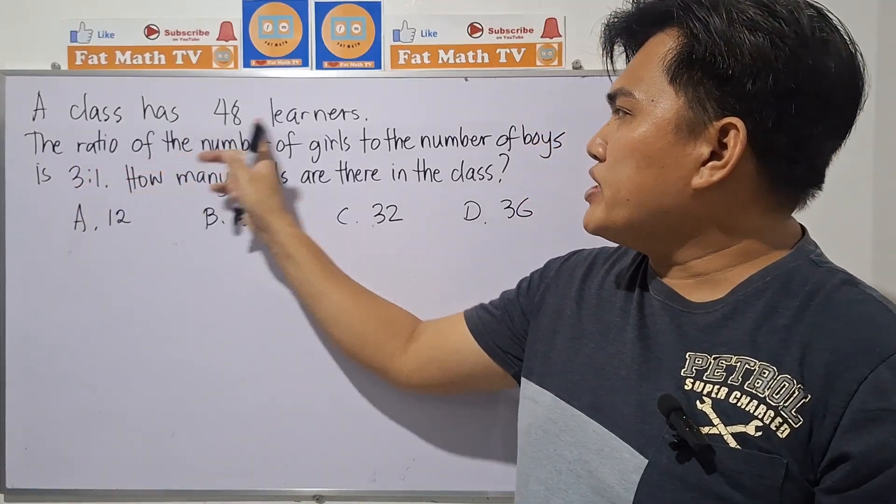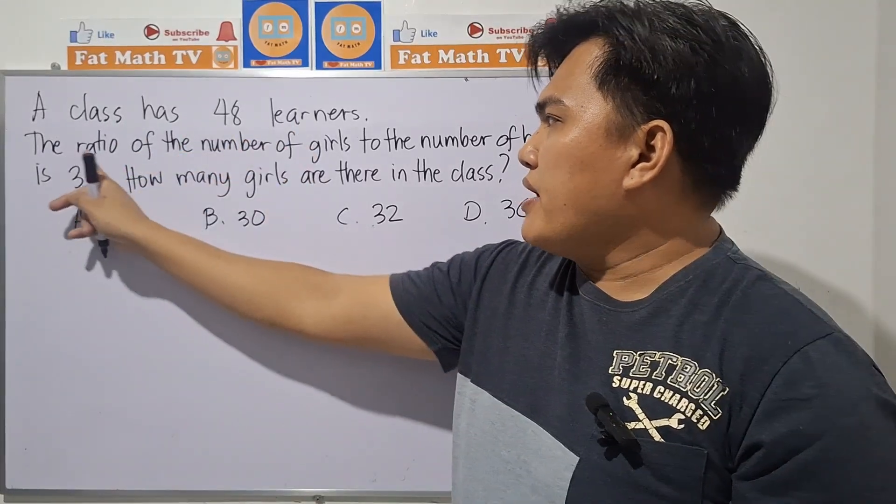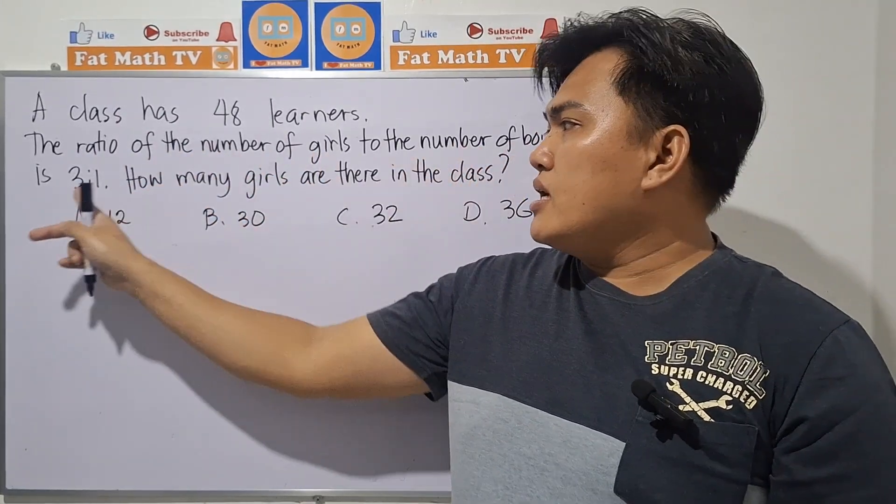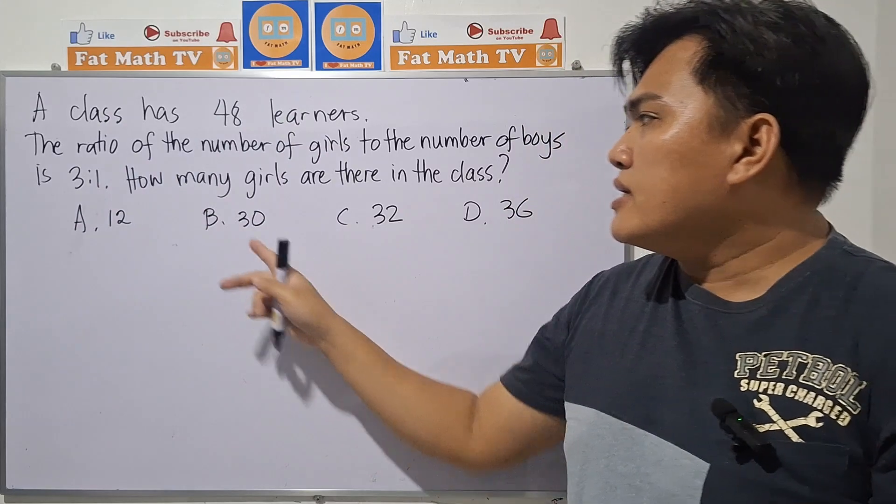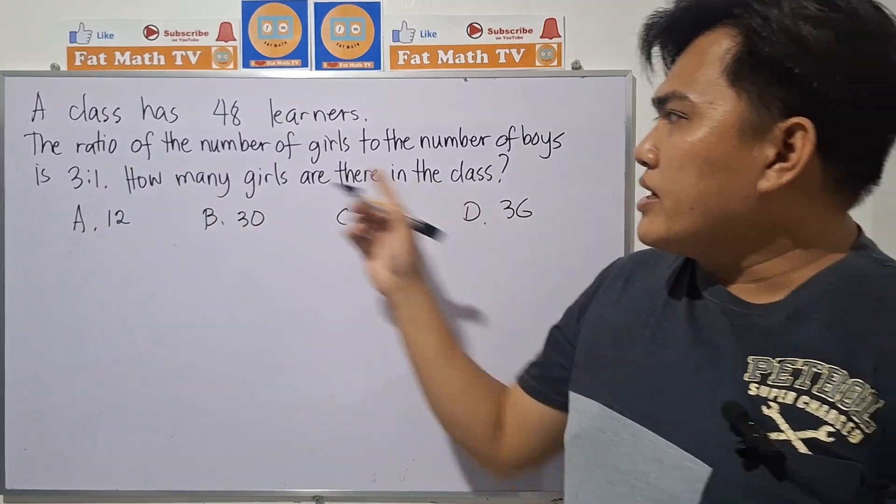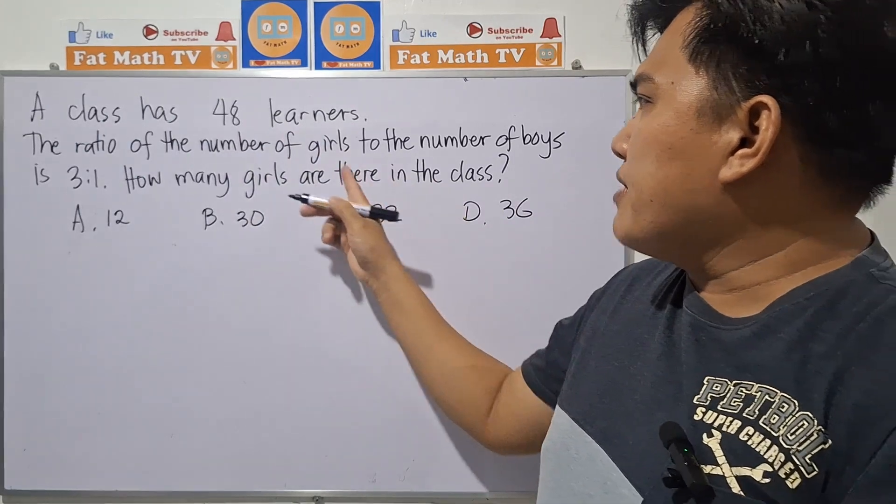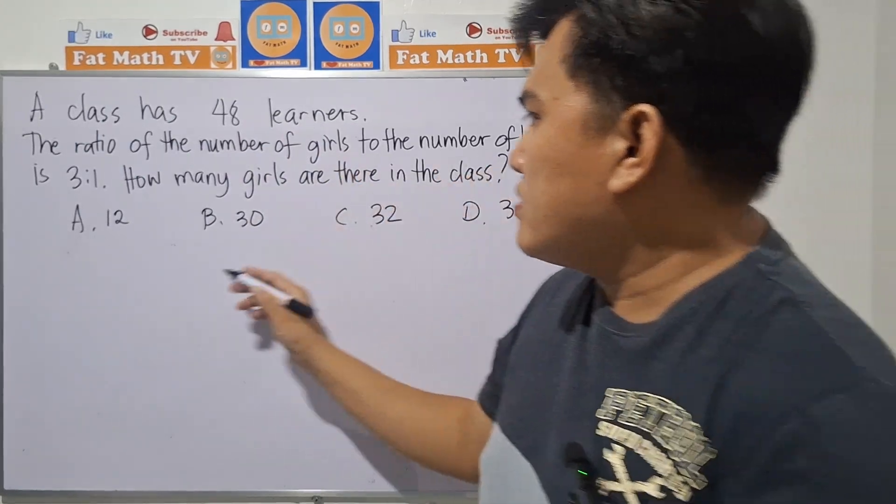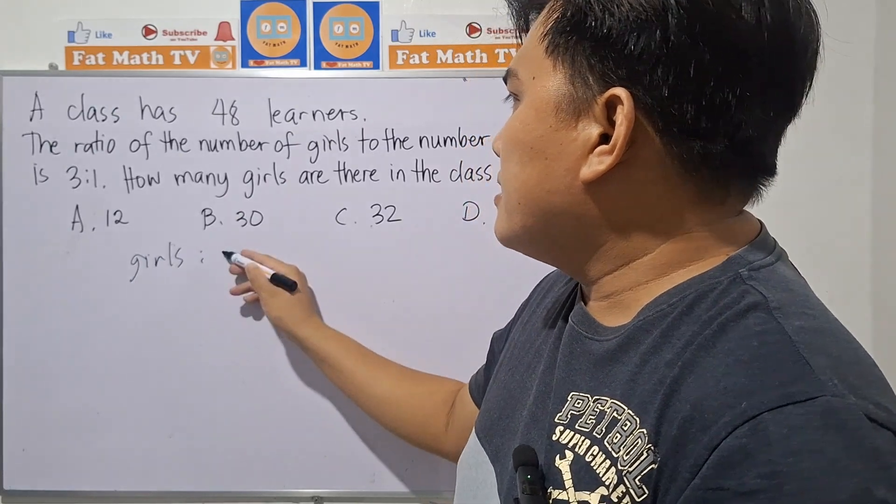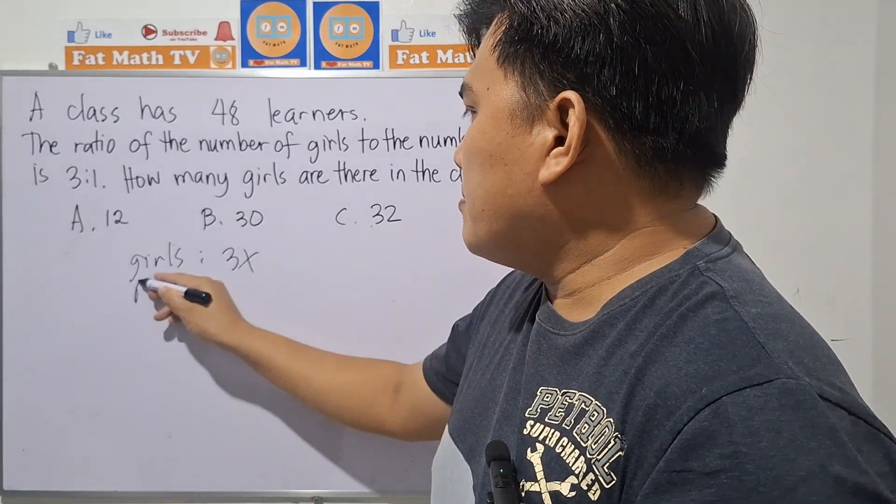A class has 48 learners. The ratio of the number of girls to the number of boys is 3 to 1. How many girls are there in the class? Okay, so there are 48 learners and the ratio of girls to boys is 3 to 1, so we can represent the number of girls as 3x and the number of boys as x.